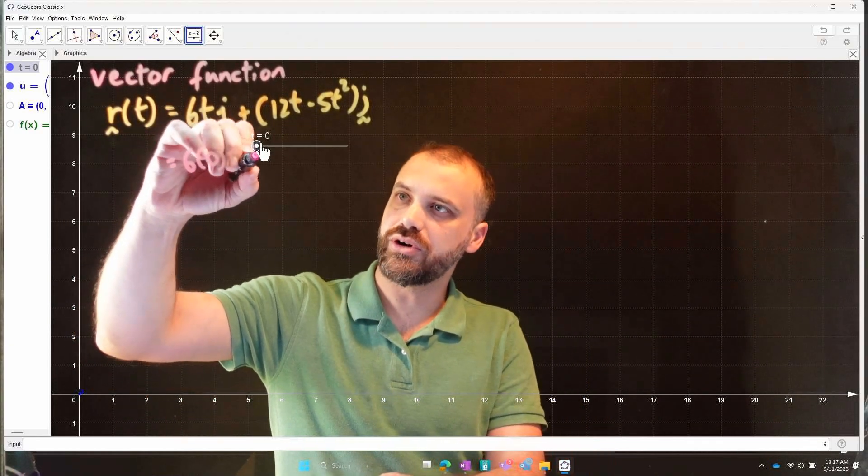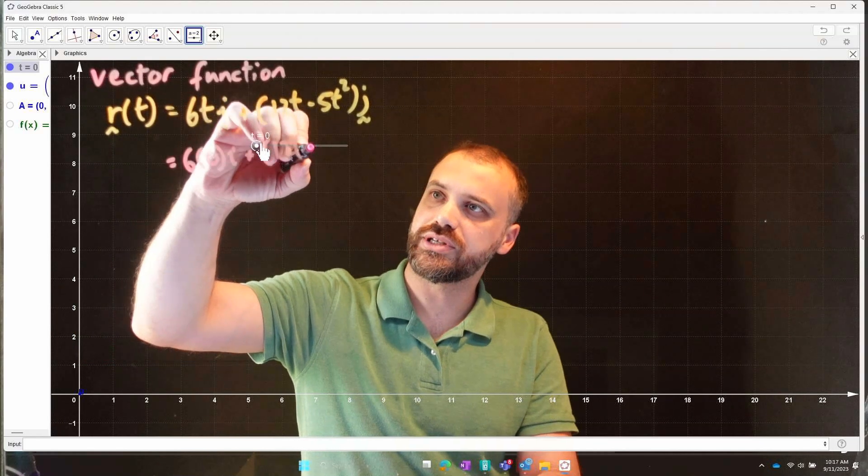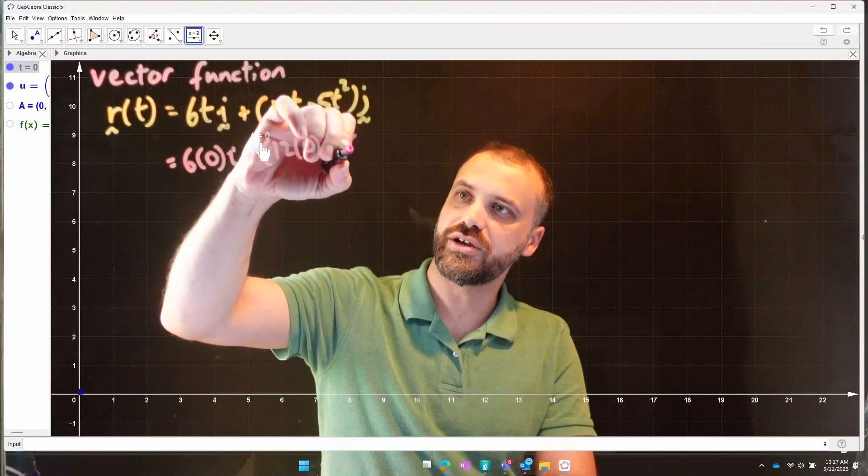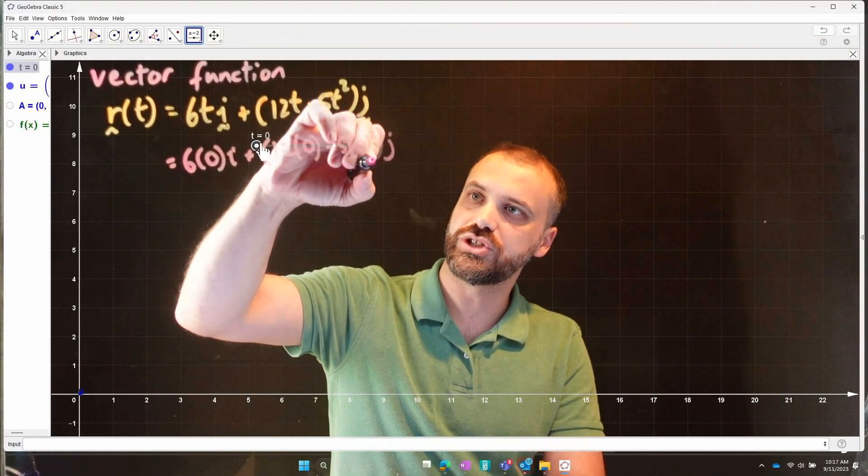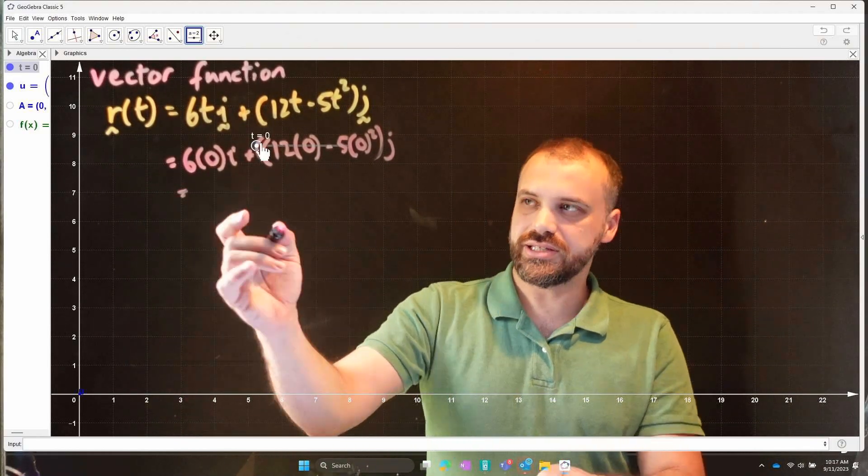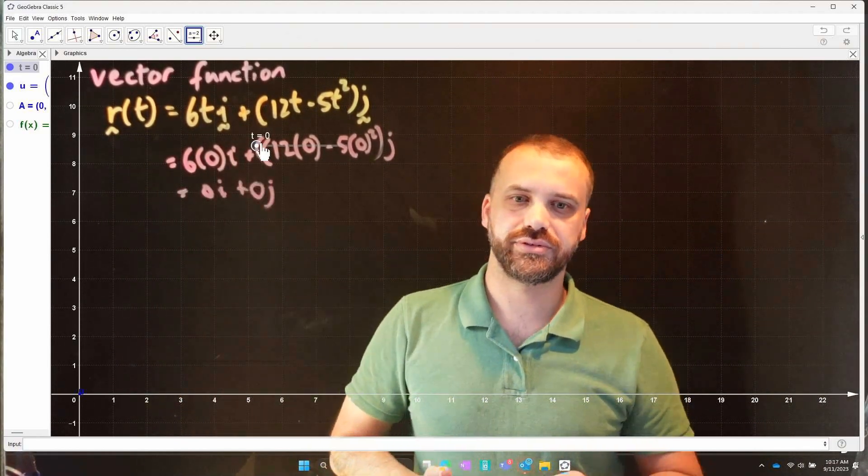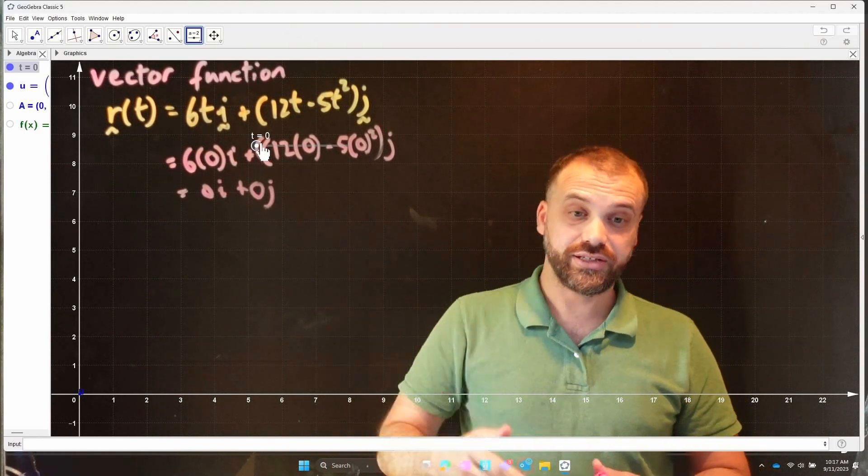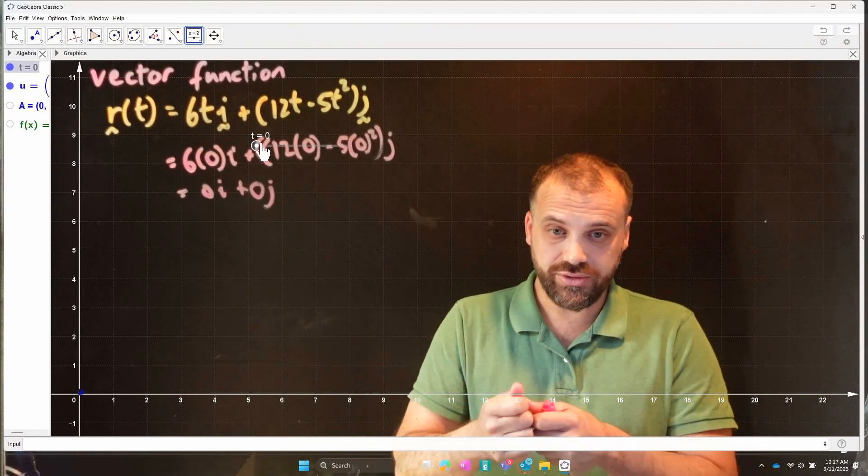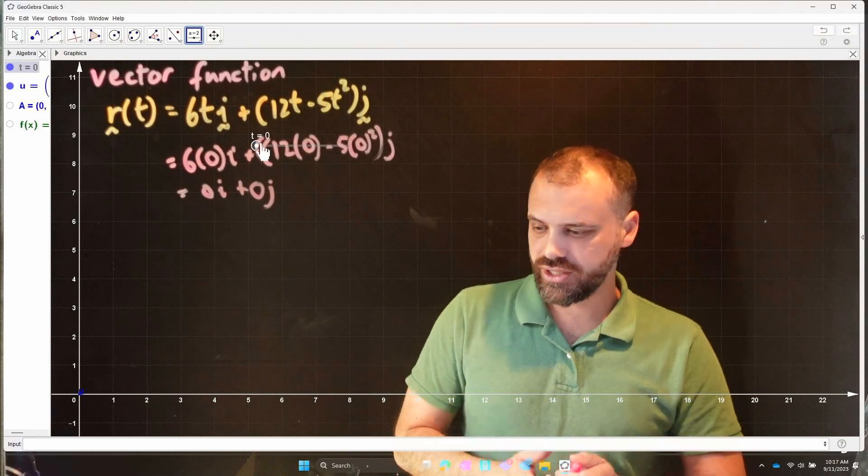let's see what happens when we sub 0 into our part. 6, 0i plus 12, 0 minus 5, 0 squared j. You're going to get 0i plus 0j. That's a vector. It's a vector of 0 length, 0i, 0j.